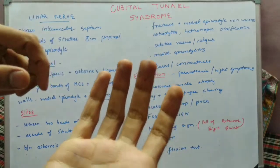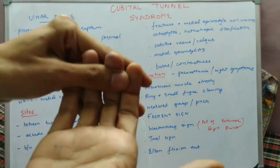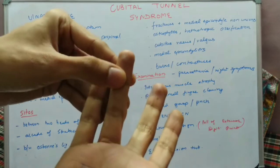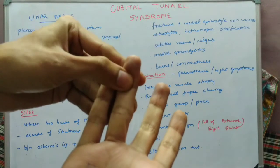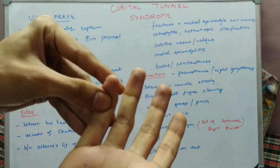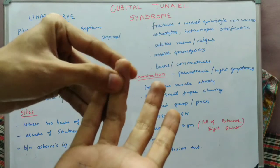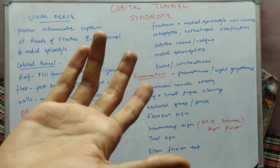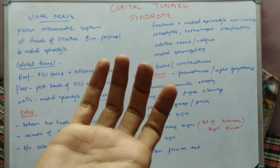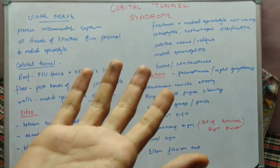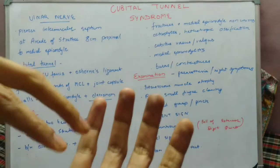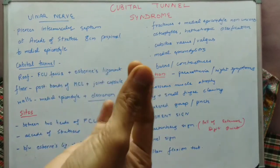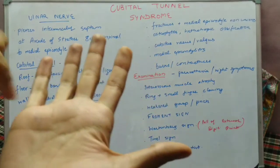There will also be weakened grasp and pinch. Grasp is weakened because the FDP, which inserts over the distal phalanx causing flexion of the distal phalanx, is affected due to ulnar nerve involvement, leading to weakening of the grasp.